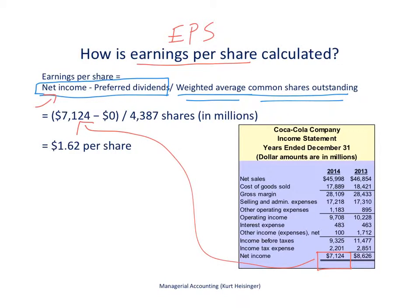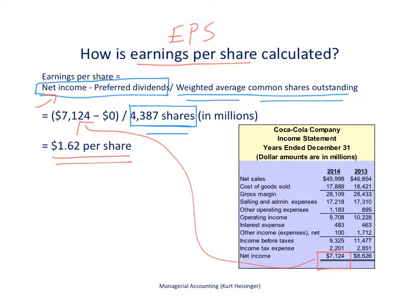For Coca-Cola, the weighted average common shares outstanding was 4,387 million shares. Dividing net income by that figure gives us $1.62 per share — Coca-Cola's earnings per share. This means that if you own one share of Coca-Cola stock, they earned $1.62 on that share during 2014. It doesn't mean they paid that in dividends; companies typically pay out only a small portion of earnings as dividends.